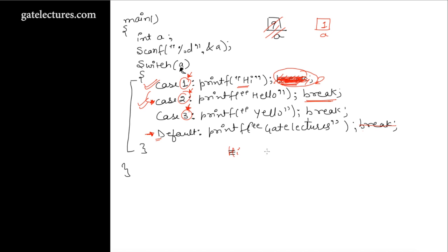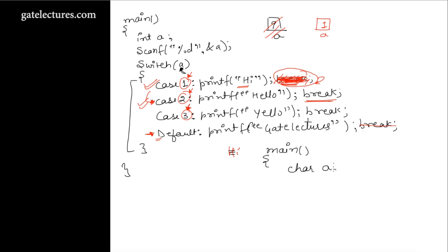Let us suppose we are having this program: main. Instead of int, let me use a character. So I am using char a, and let us just give some value to a directly. Let us suppose a is equal to capital A, and then we are doing switch(a) and according to this we are going to execute some code.